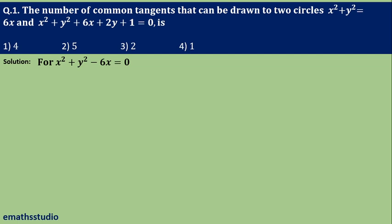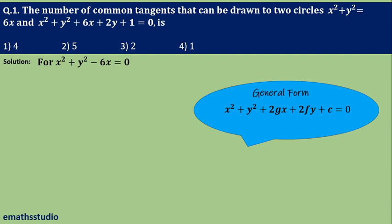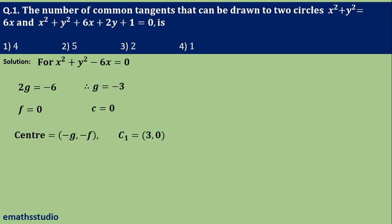For the first circle, comparing with the general equation we get 2g = −6, so g = −3; 2f = 0, so f = 0; and c = 0. The center is (−g, −f) = (3, 0) and the radius using √(g² + f² − c) equals 3 units.